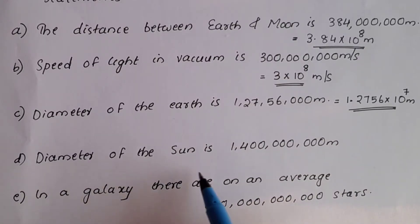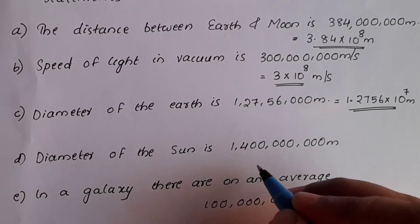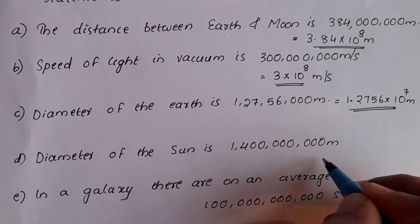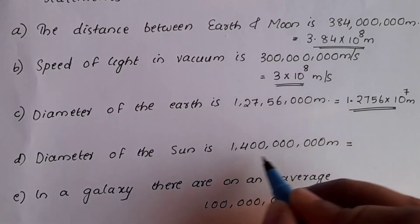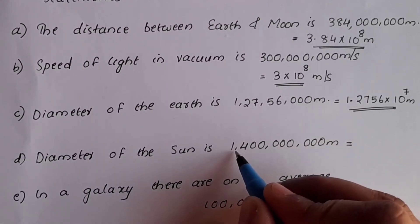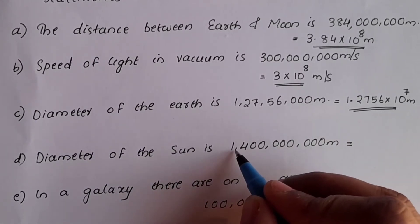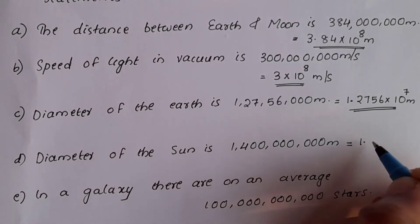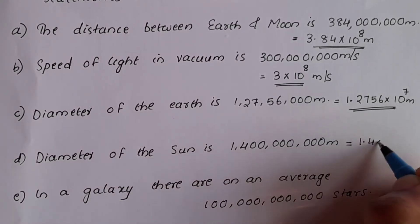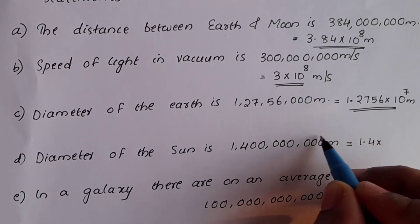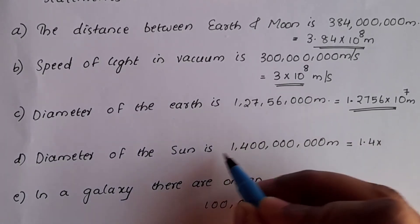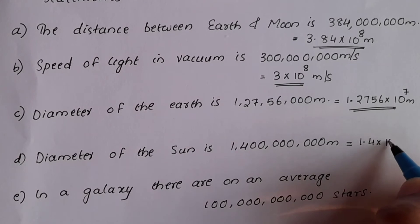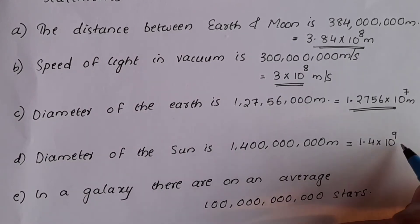Next is the diameter of the Sun. Using the standard formula, it is equal to 1.4 into 10 raise to 9. The total number of digits counted is 10, and 10 minus 1 is 9. So the answer is 1.4 into 10 raise to 9 meters.